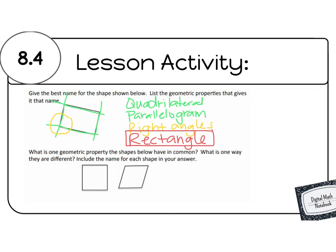All right, here's our second question. What is one geometric property that the shapes below have in common? What is one way that they are different? And it says we need to include the name of the shapes in our answer. So let's first look at what they have in common, and that will help us name them.